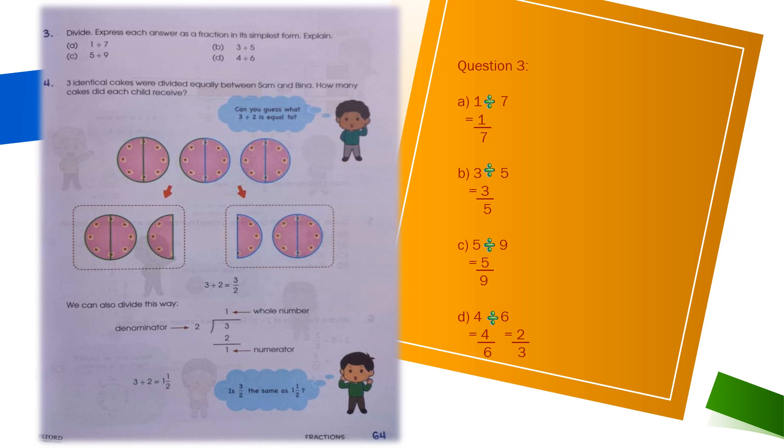In question 4, we have three identical cakes divided equally between Sam and Bina. How many cakes did each child receive? As there were three identical cakes, three comes in the numerator, and they are divided among Sam and Bina — two children — so two comes in the denominator. This is an improper fraction, so we can further solve it and represent it as a mixed number. We divide 3 by 2: 2 comes outside and 3 comes inside. Since 2 times 1 is 2, and 2 times 2 is 4 which is too large, we multiply 2 by 1 and have 1 as a remainder.